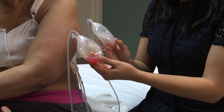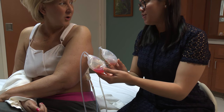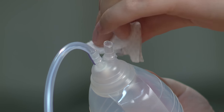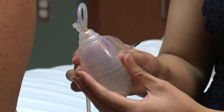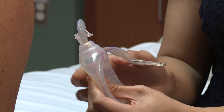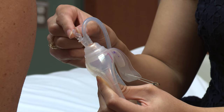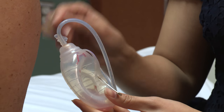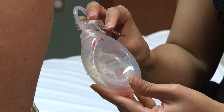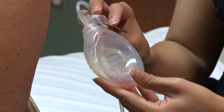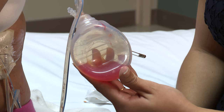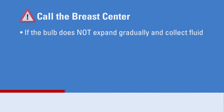After emptying and measuring the fluid from each bulb, you will need to reactivate the bulb suction. First, wipe the port opening with an alcohol swab to clean it. Next, gently squeeze the bulb and flatten it as completely as possible. While the bulb is completely flattened, insert the stopper into the emptying port as far as possible. Release your grip from the bulb. If the bulb stays flattened, you have successfully reactivated the bulb suction. In the next few hours, you will notice the bulb expanding gradually as it fills with fluid. If the bulb does not expand gradually and collect fluid, call the breast center.